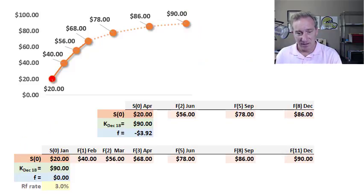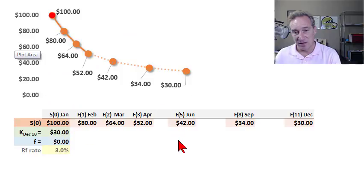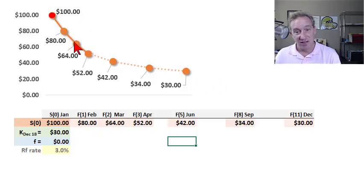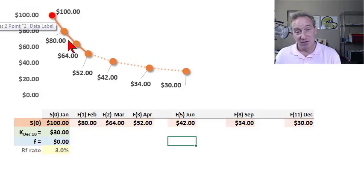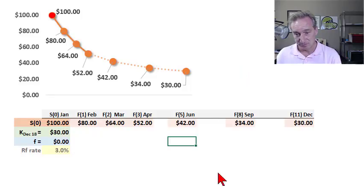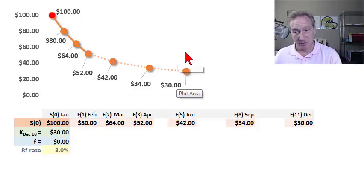Now let's take all three of those features and imagine them in a scenario of backwardation — not normal backwardation, but backwardation as the fancy term for an inverted curve. Like contango, backwardation is observed. In this case, the spot price is $100 and futures prices are declining with maturity. I usually think of oil, because oftentimes oil is in backwardation owing to its high convenience yield.